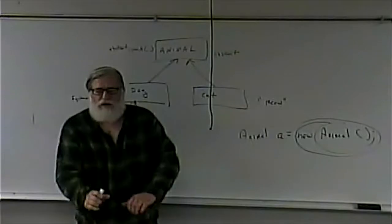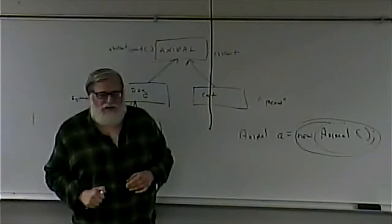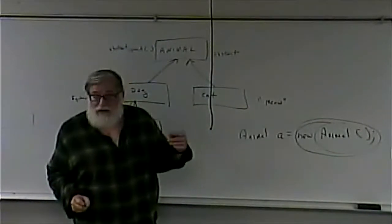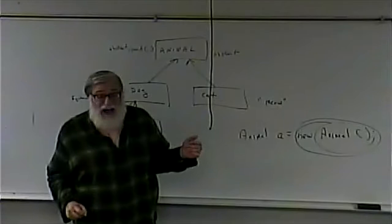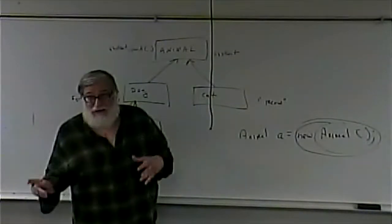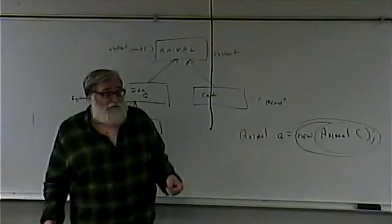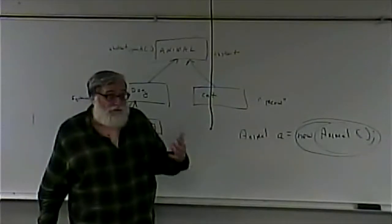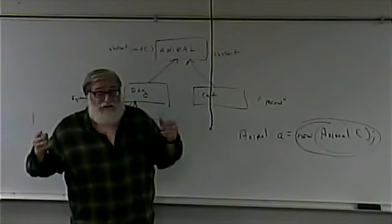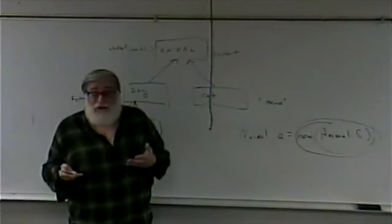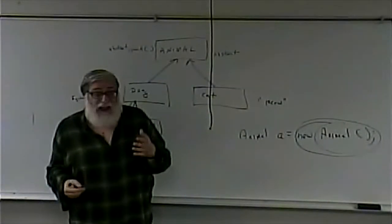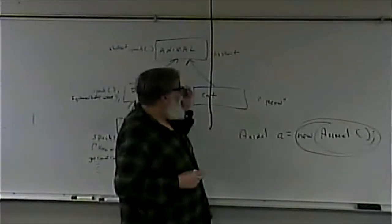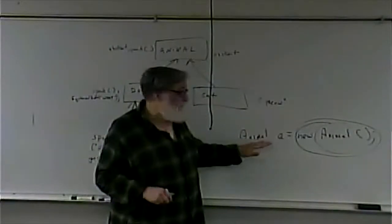On a more conceptual level, the thought is: there's nothing in the world that is simply an animal. Every real animal that exists is a specific kind — giraffes, elephants, turtles. None of them are merely animals. So to have a real-world one of these, you have to get more specific and implement something concrete. That's an abstract class — in programming terms, you cannot instantiate it.